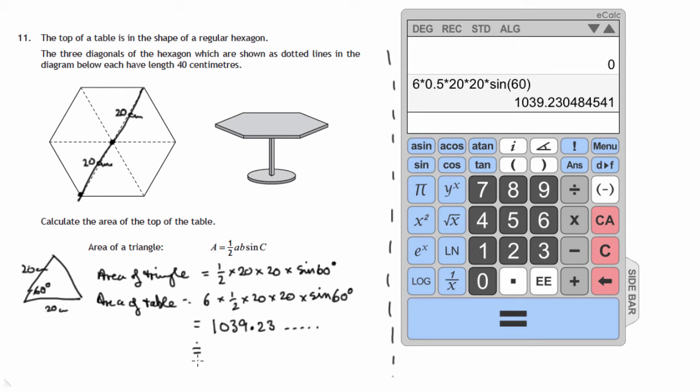So that's 1039.23 and so on. So that's approximately, let's work out what that is, measurement, units of measurement, would be centimetres squared. Let's just take it to the nearest centimetre squared. So it's approximately 1039 square centimetres. And that would be to the nearest square centimetre. So that's the first method using this trigonometric approach where we're using the half AB sine C formula for the area of a triangle.